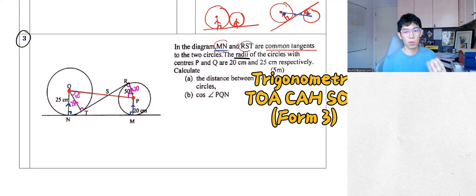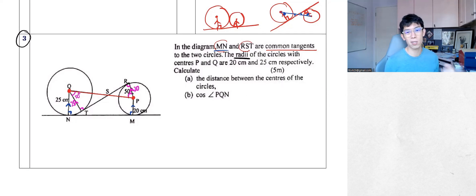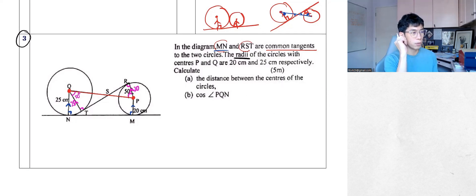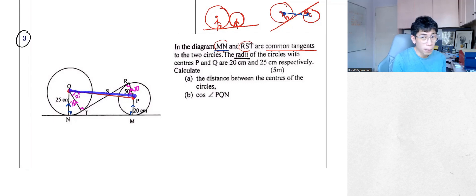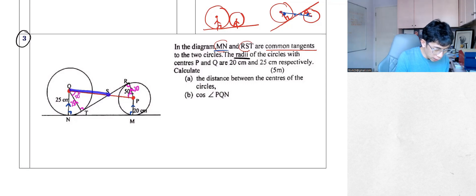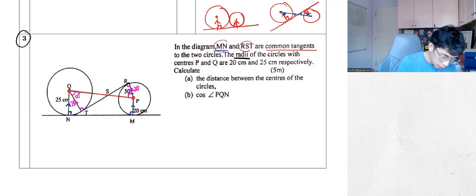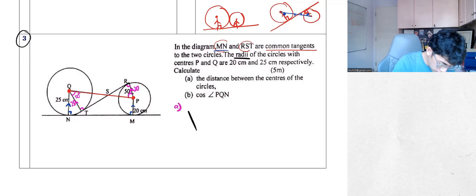Chapter five — SOH CAH TOA, that kind of thing. That's the one. Now, you want to calculate the length QP, but you can't solve it in one shot. So you need to separate it: QS is one part and SP is another part. You're going to separate it into two different right angle triangles.